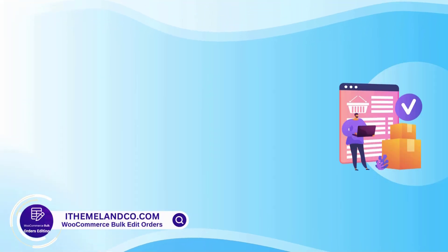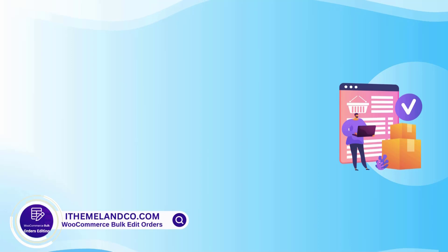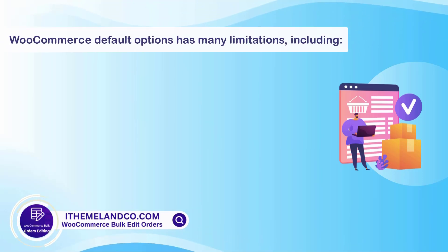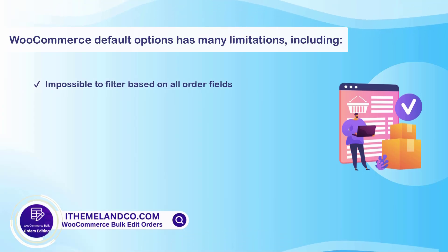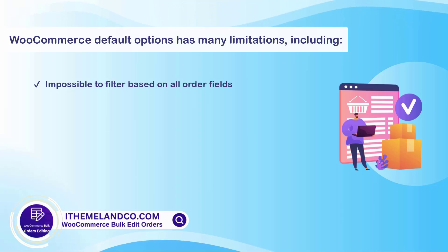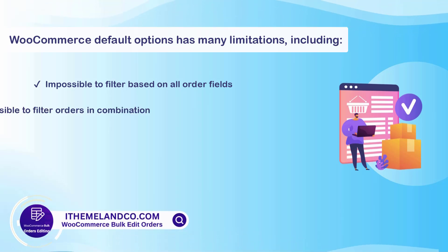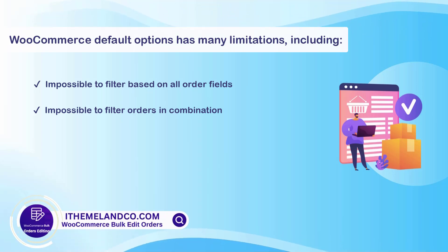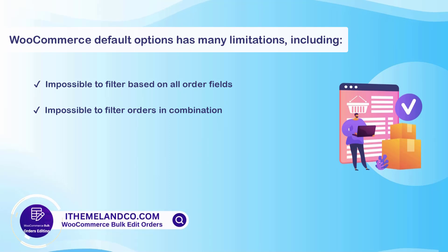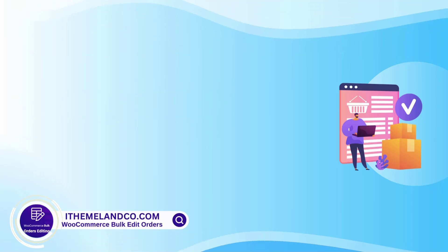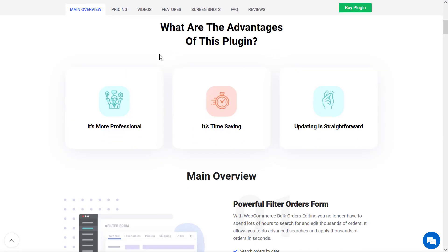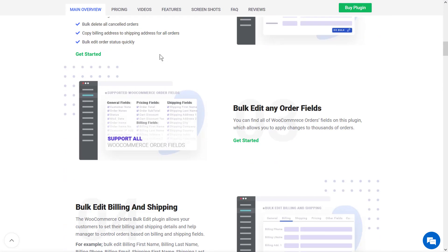As you may have noticed, bulk deletion of orders with WooCommerce default options has many limitations, including: it's impossible to filter based on all order fields such as product, shipping method, payment method, etc. It's impossible to filter orders in combination, and you cannot filter orders for specific products in a particular period. If you face these problems, we suggest you install the WooCommerce Bulk Edit Orders plugin.